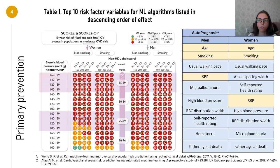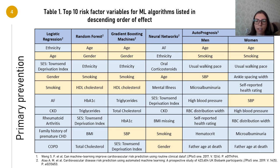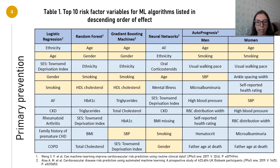But the computer chose some other factors too. For example, the autoprognosis model shown on the right part of the slide identified 20 of the most important indicators. The level of physical activity and blood test results were rated as more important in the development of cardiovascular disease than classical risk factors. Also, in the top five risk factors were microalbumin in urine for men and self-reported health rating for women.